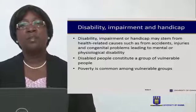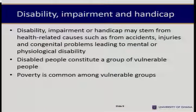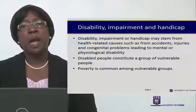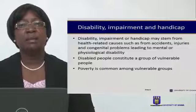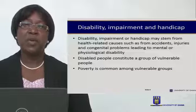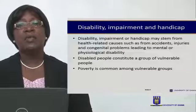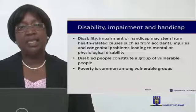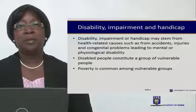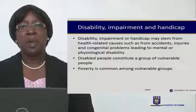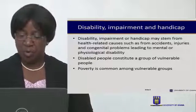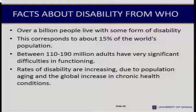Disability, impairment, and handicap may arise from health-related causes such as accidents, injuries, and congenital problems that lead to mental or physiological disability. Disabled people are considered by a school of thought as vulnerable people, and poverty is characteristic of vulnerable groups — meaning disabled people tend to be poor. Let's look at some facts from the WHO about disability.